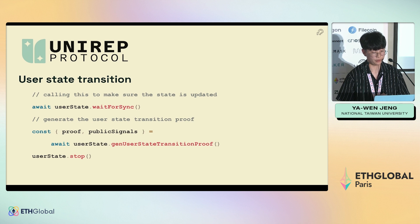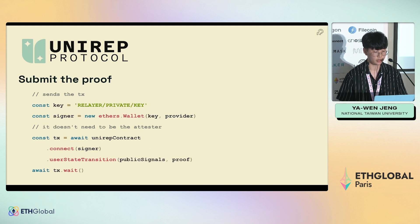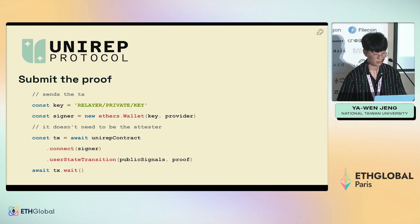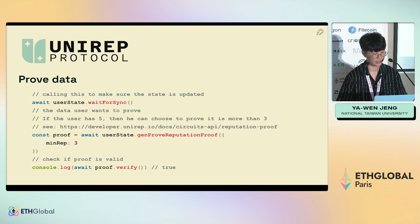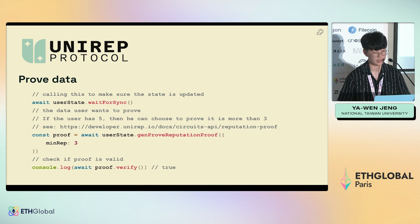When an epoch ends, the user should call a user state transition to receive all the data. After the user state transition, the user can prove how much data they have. Here is an example of how to generate a user state transition proof — this proof can be submitted by a relayer. After user state transition, the user can generate a proof to show how much data they have. For example, if the user has five, they can prove they have at least three — so you don't have to reveal your exact amount, but you can generate a valid proof to prove you are in a certain range.